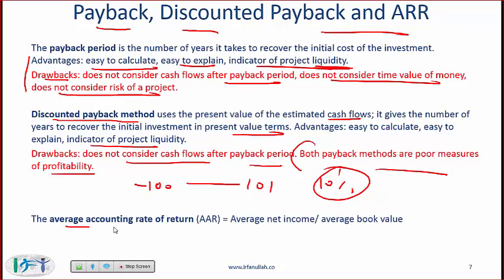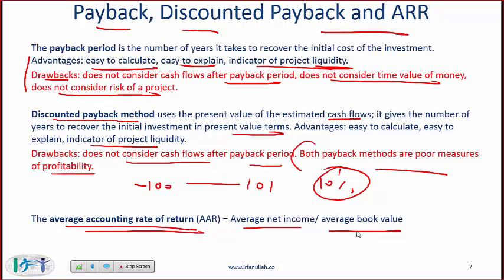The average accounting rate of return (AAR) is not overly important but worth noting for completeness. For a given project, you calculate the average net income over a particular period and divide by the average book value over that period.